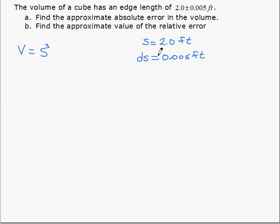we can use ds equal to 0.005 feet. So that can be plus or minus. So for part a, then, we need a differential of volume, which is going to be 3s squared ds.